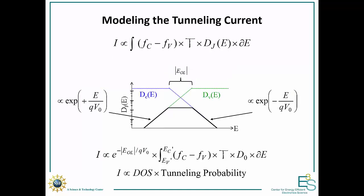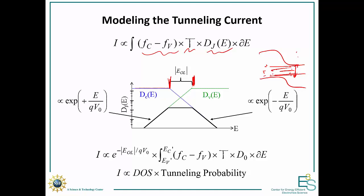To put all of these together, we need a model for the current. Our current is essentially proportional to the integral of the Fermi functions — the electrons must be occupied — times the tunneling probability times the joint density of states. I want to illustrate the joint density of states. Let's say we have a PN junction where the bands don't fully overlap, so we have a region with band tail states. This corresponds to the region where we examine our conduction band density of states, which is high in the band and then falls off exponentially at the band edge.